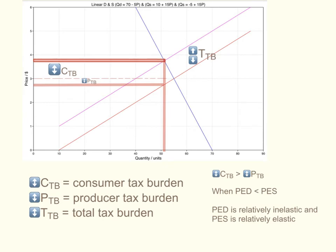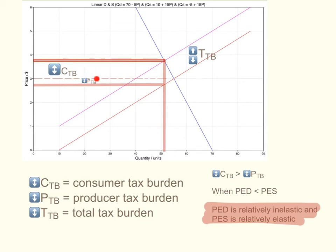Now, what about the opposite situation — where demand is relatively inelastic and supply is relatively elastic? The vertical distance between the two supply curves is the total tax burden. The vertical distance from the new equilibrium to the old equilibrium gives the consumer tax burden. And the vertical distance from the old equilibrium to the old supply curve gives the producer tax burden. Because price elasticity of demand is relatively inelastic and price elasticity of supply is relatively elastic, the consumer will bear the greater share of the tax burden, so the consumer tax burden ends up being larger than the producer tax burden.